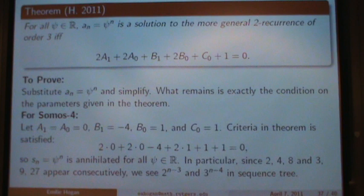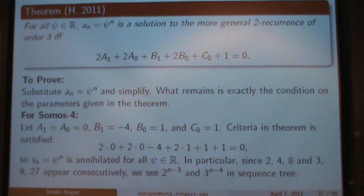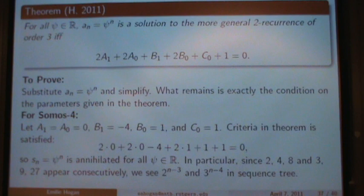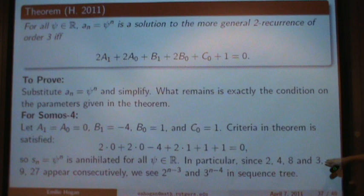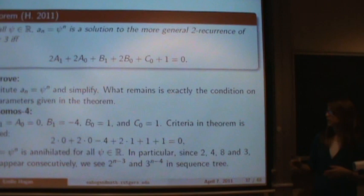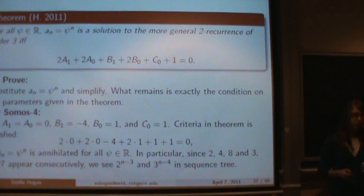Similarly, for every real number psi, psi^n is a solution to this order-3 2-recurrence if and only if a certain equality in the coefficients holds. Again, the proof is just substitution and simplification. In the SOMOS 4 case this equality holds, so psi^n is a solution. There's an important distinction: being a solution to the recurrence doesn't mean it shows up in the sequence tree—since the tree produces only rationals, E^n can't appear. But because we see 2, 4, 8 and 3, 9, 27 in the tree, we know the branches 2^{n-3} and 3^{n-4} are there.